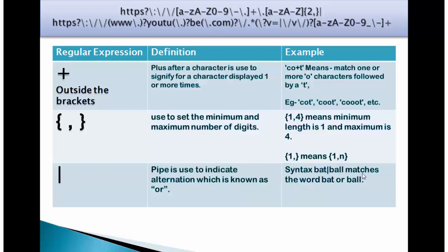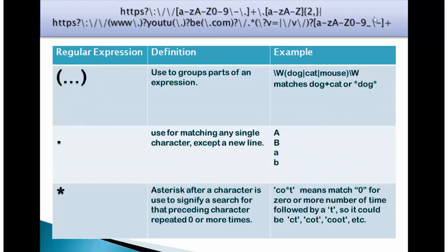Syntax bat pipe ball matches the word bat or ball. Then there is this https with a question mark meaning you can use it with s or without s forward slash forward slash after colon. And then there are two back slashes to nullify the effect. Then there is a www to indicate whether you use it or not, still the expression will be valid. Then you can use this link youtube and check this out to ensure that if you enter a youtube url also it will be treated as valid. Also look at these curve brackets. These are used to group parts of an expression. If you look at dot it is used for matching any single character.